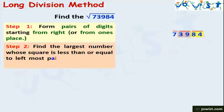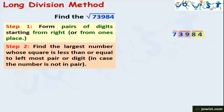The second step is to find the number whose square is less than or equal to the leftmost period. We have to find the nearest square to 7. The nearest squares to 7 are 4, 9, and 16. Since 7 lies between 4 and 9, and 4 is the square of 2 while 9 is the square of 3, we use 2.